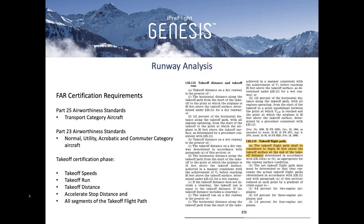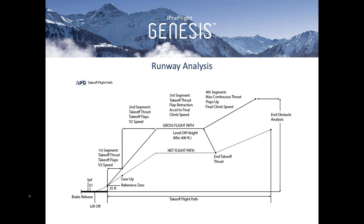Reading the regulation on the right: the takeoff flight path shall be considered to begin 35 feet above the takeoff surface at the end of the takeoff distance. The takeoff profile is broken into two elements: the takeoff distance, beginning at brake release, losing an engine at V1 and climbing at V2 speed to 35 feet. It's during this phase of flight that accelerate-go, accelerate-stop, and all-engines operations are measured. This is what is used in the field length graphs located in the AFM.